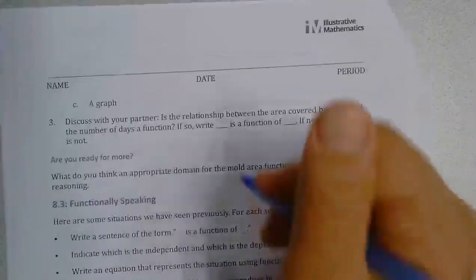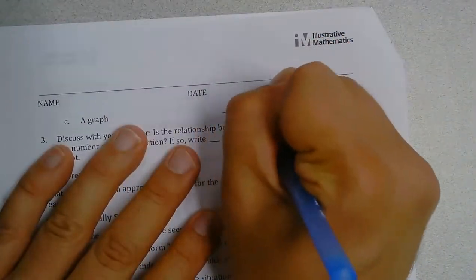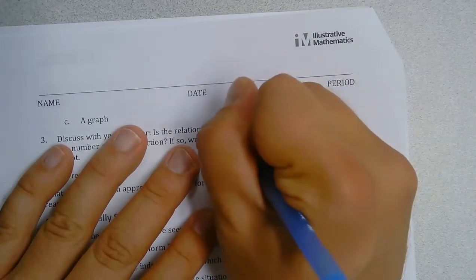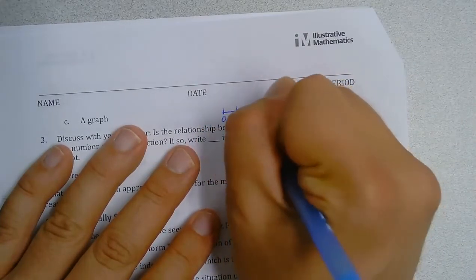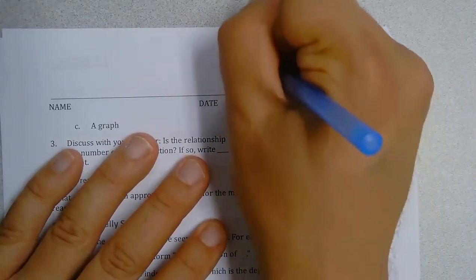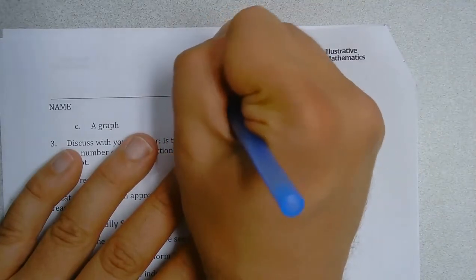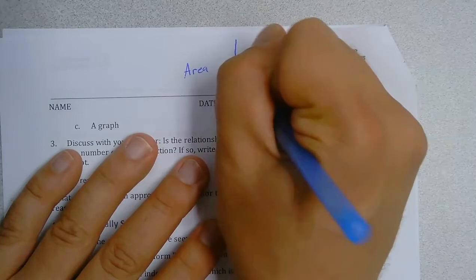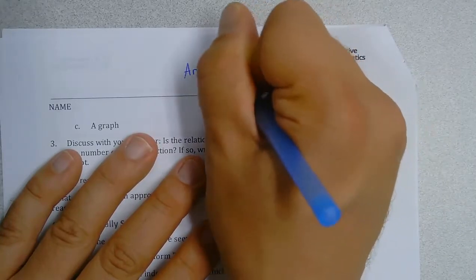So to make a graph of that our input is our day. So we would have day zero, one, two, three, and four. And again this is a rough sketch. And then this is going to be our area and I'm going to count by fives. So five, 10, 15, and 20.